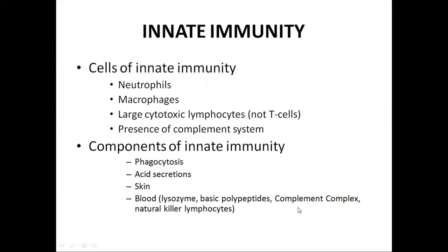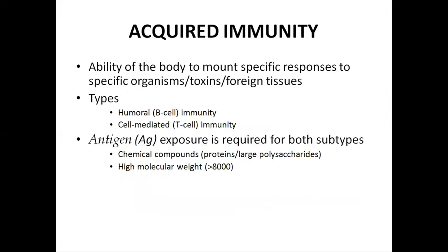Complement complex and natural killer cells are also part of innate immunity. Acquired immunity is the ability of the body to mount specific responses to specific organisms, toxins, or foreign tissues. There are two types: humoral immunity, which is B cell immunity, and T cell immunity, also called cell-mediated immunity. Both types require antigen exposure. An antigen is a chemical compound — it can be a protein or a large polypeptide with a molecular weight of more than 8000.